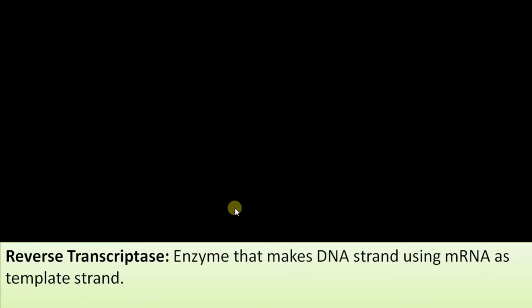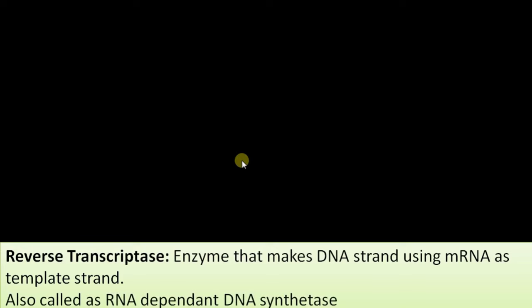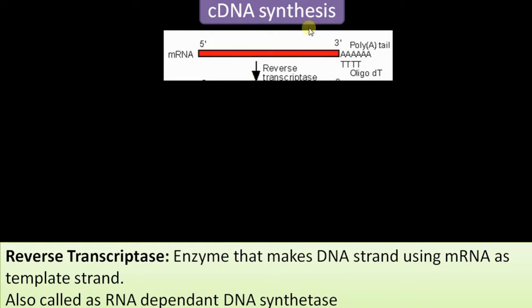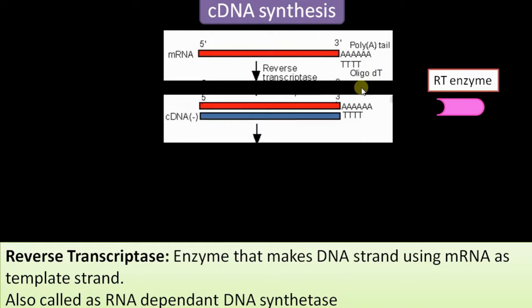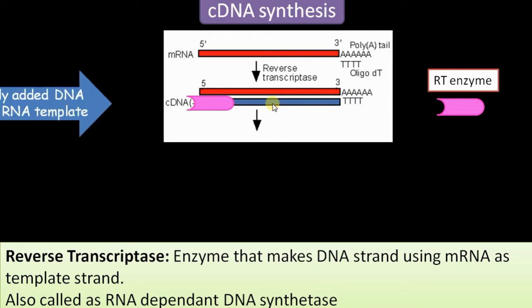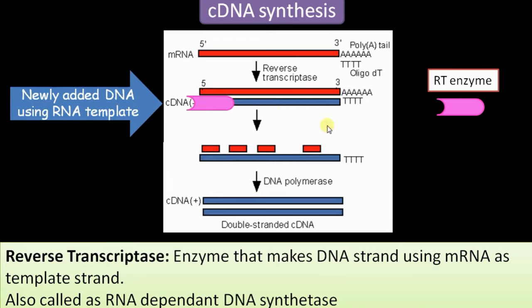Reverse transcriptase is the only enzyme capable of using mRNA as a template for DNA synthesis — it is a viral enzyme widely used in the preparation of cDNA libraries. Given an mRNA molecule with a poly-A tail and an oligo-dT primer, reverse transcriptase synthesizes a cDNA strand using the mRNA as a template, forming a DNA-RNA hybrid. Then RNase H cleaves out the RNA strand and the second cDNA strand is synthesized. The function of reverse transcriptase is the formation of a DNA strand using an mRNA template.